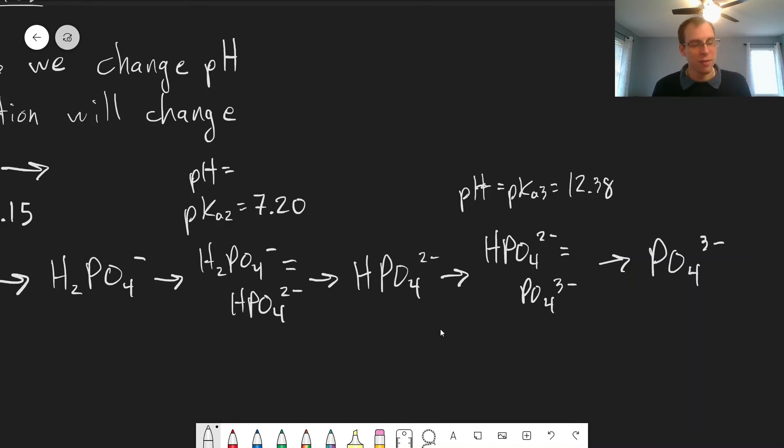...mostly you'll have phosphate, then you'll have a little bit of hydrogen phosphate, you'll have essentially zero of phosphoric acid H3PO4, all of it will be deprotonated. There will be a tiny amount that's still present based on the equilibrium constant, but it's going to be pretty negligible.